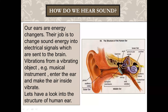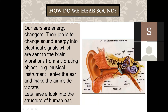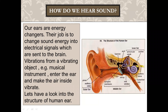The cochlea contains hair cells that sense the vibrations traveling to it. These cells send the message through the auditory nerve to the brain, which interprets it and allows us to hear.